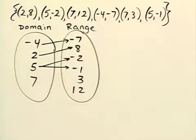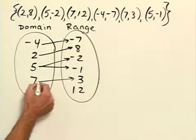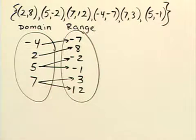And 7 was paired with 12 and also 3, so we'll draw arrows from 7 to 3 and from 7 to 12. That is the map of this relation.